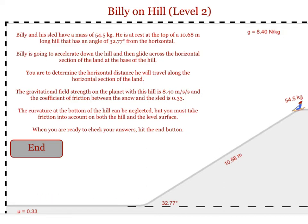The way you want to attack this problem is to start out by finding the total mechanical energy that Billy has at the beginning. So using the triangle of the hill, you find the height of Billy above the level ground. You then find his potential energy due to gravity at this point.